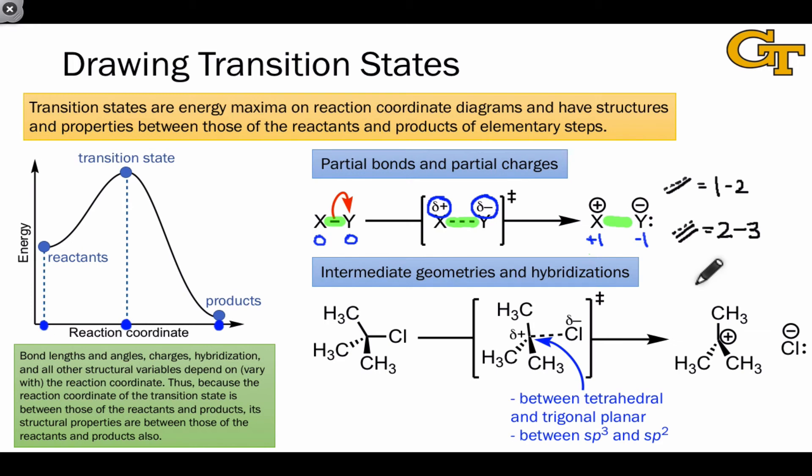Intermediate geometries and hybridizations come in any time there's a geometric change as the step occurs. Take, for example, the SN1 step here, in which chlorine is departing with a pair of electrons to form a carbocation and chloride.